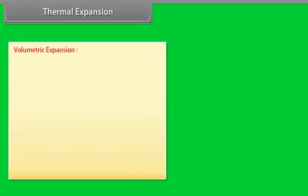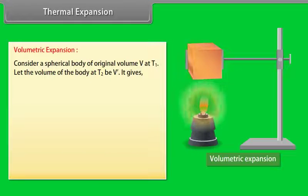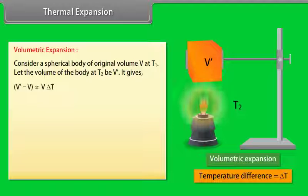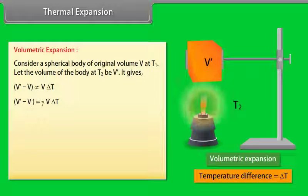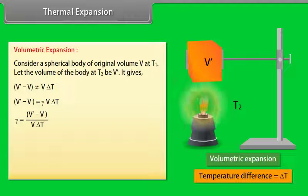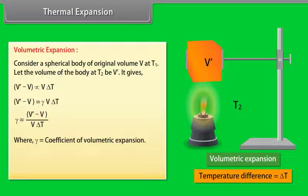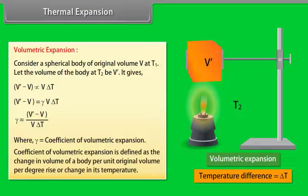Volumetric expansion: Consider a spherical body with original volume V at temperature T1, and let the volume become V' at temperature T2. Then V' − V = γVΔT. The coefficient of volumetric expansion γ = (V' − V)/(VΔT). It is defined as the change in volume of a body per unit original volume per degree rise in temperature.